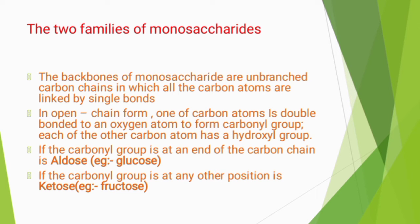Next are the two families of monosaccharides. The backbone of monosaccharides are unbranched carbon chains in which all carbon atoms are linked by single bonds. In open-chain form, one carbon atom is double-bonded to an oxygen atom to form a carbonyl group, and each of the other carbon atoms has a hydroxyl group. If the carbonyl group is at the end of the carbon chain, it is an aldose — for example, glucose. If the carbonyl group is at any other position, it is a ketose — for example, fructose.